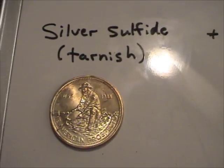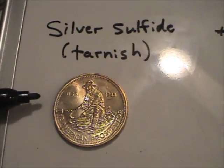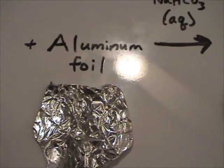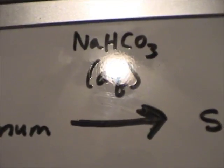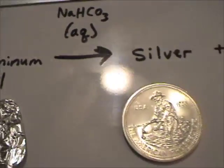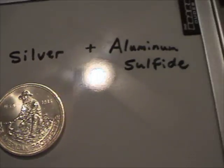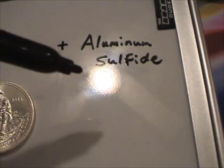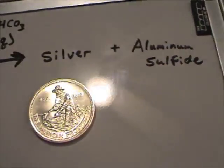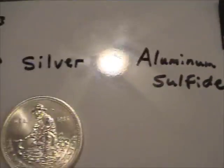Well, we have our tarnish. The silver sulfide tarnished coin plus aluminum foil in a solution of baking soda gives you your polished silver, and then the aluminum foil actually forms an aluminum sulfide layer over the aluminum foil.